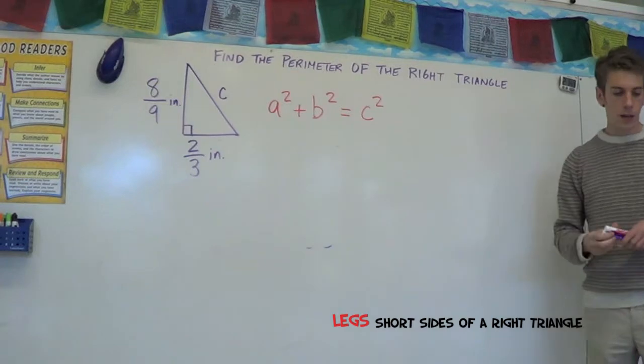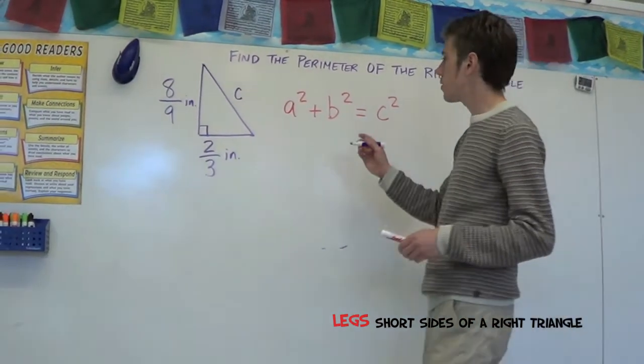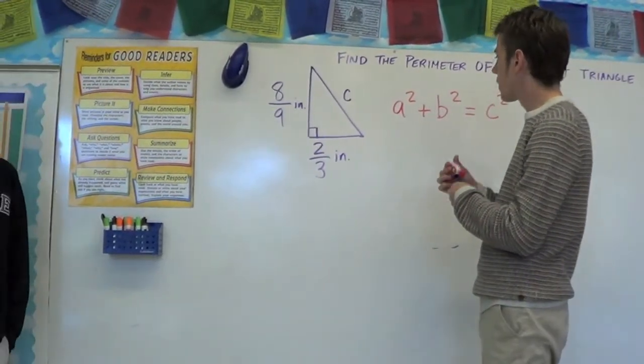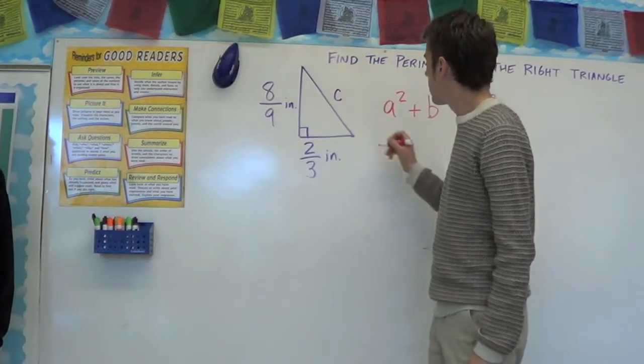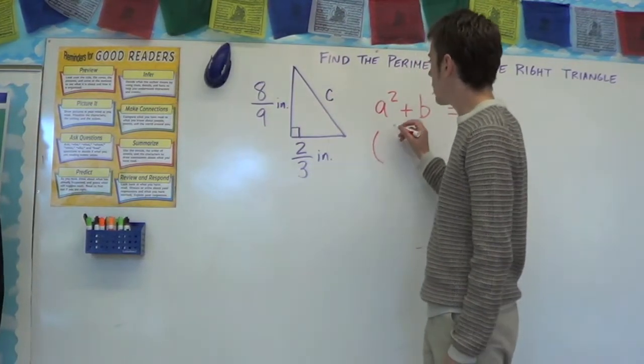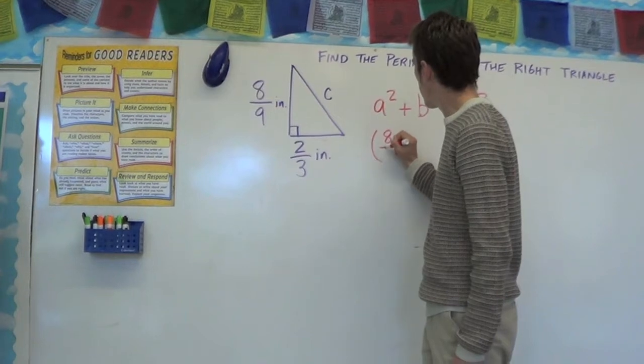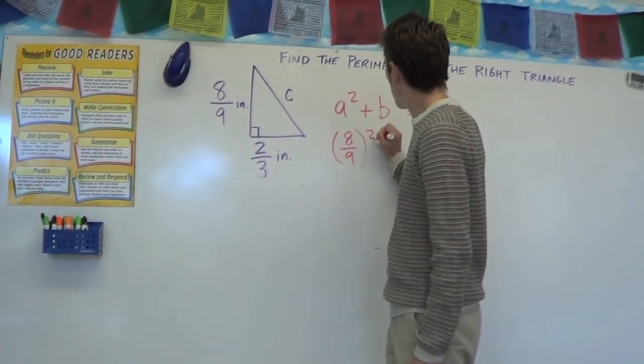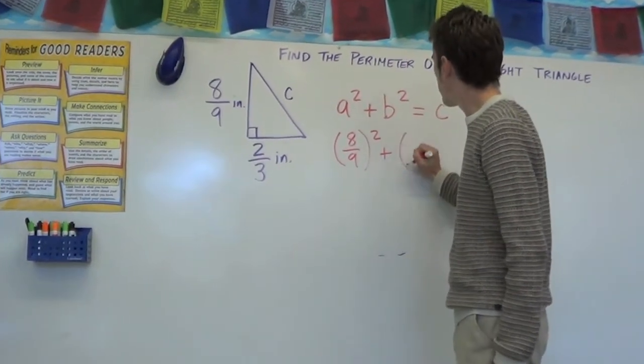So now we got to plug in the two legs we have, the two fractions, into A and B. Doesn't matter which you call A and which you call B. We'll say A is eight ninths and B is two thirds.